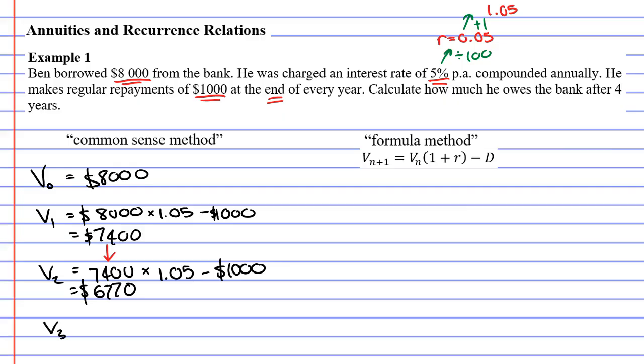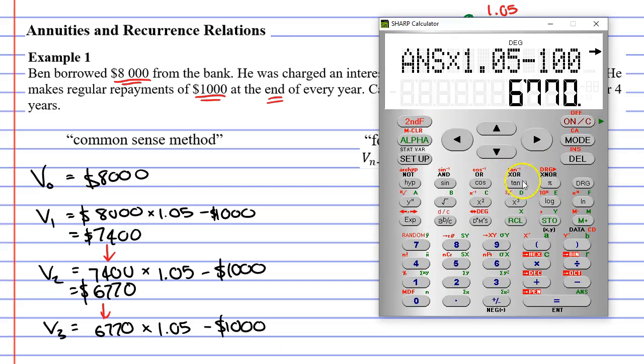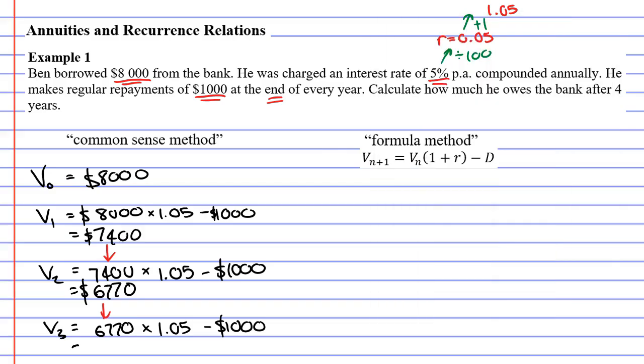Let's now move to V3. Once again, we need to use the previous result to make our calculation. $6,770. We increase this by 5%. We add our interest of 5%. And we take away our repayment of $1,000. Times 1.05 minus our repayment, $1,000. We get $6,108.50.